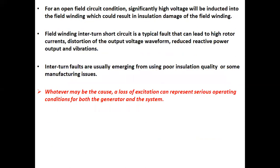For an open field circuit condition, a significantly high voltage will be induced into the field winding, which could result in insulation damage of the field winding. Field winding inter-turn short circuit is a typical fault that can lead to high rotor currents, distortion of the output voltage waveform, reduced reactive power output, and vibrations. Inter-turn faults are usually emerging from using poor insulation quality or some manufacturing issues. Whatever may be the cause, a loss of excitation can represent serious operating conditions for both the generator and the system.